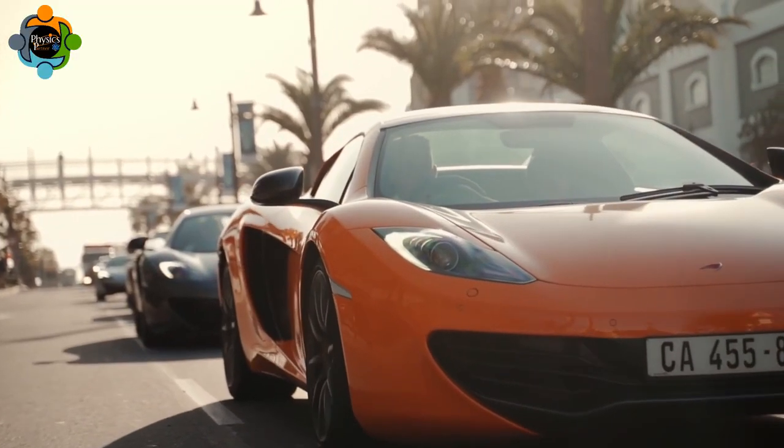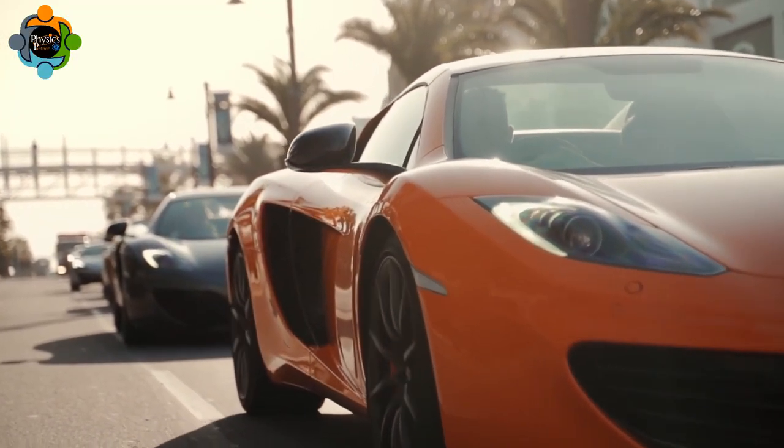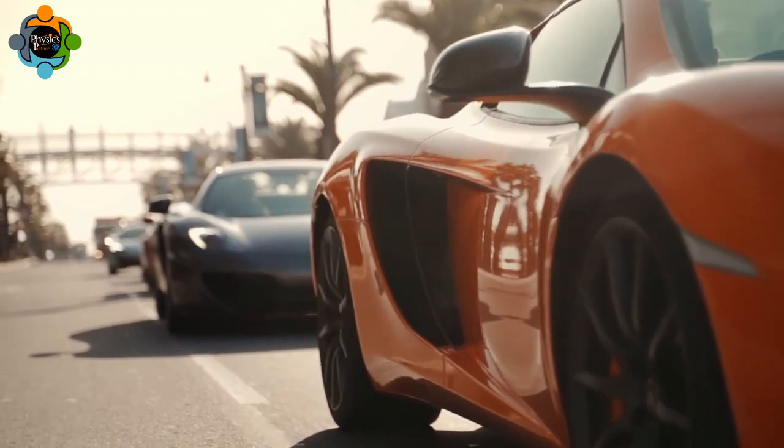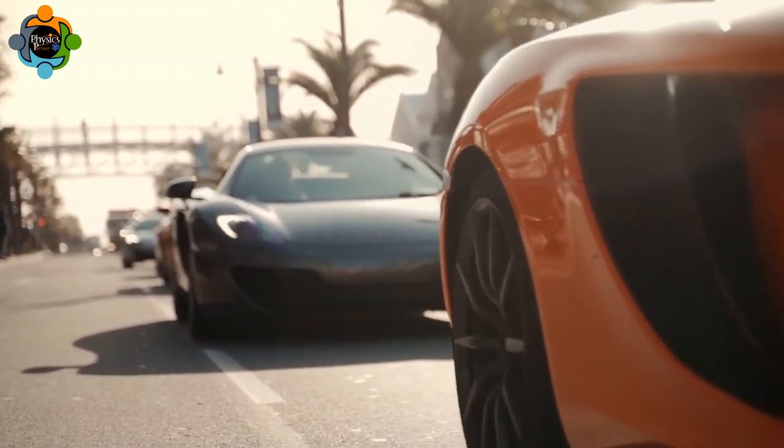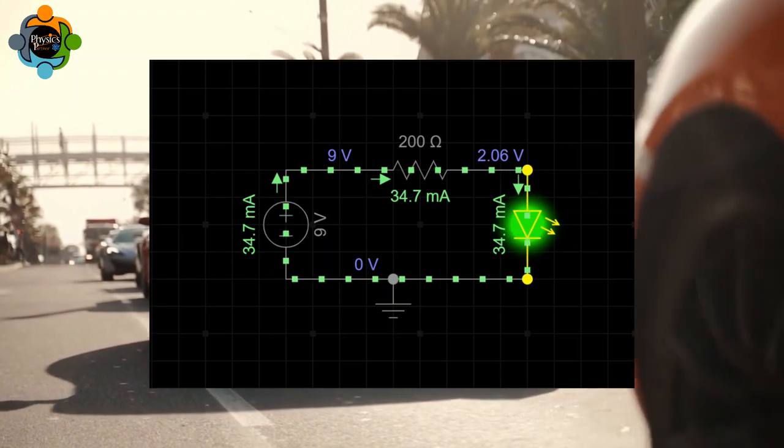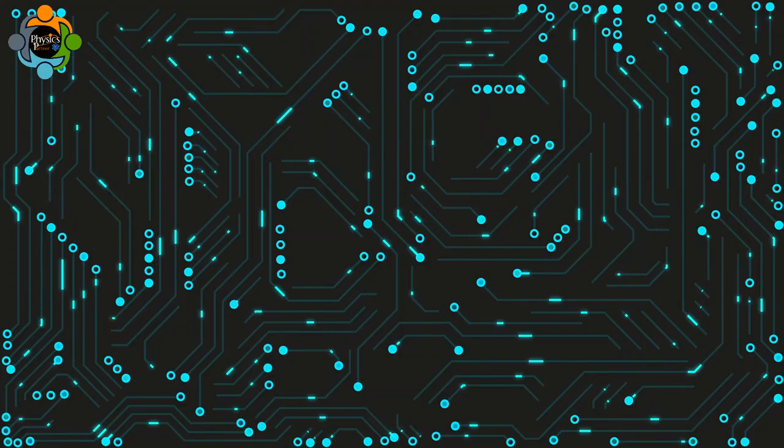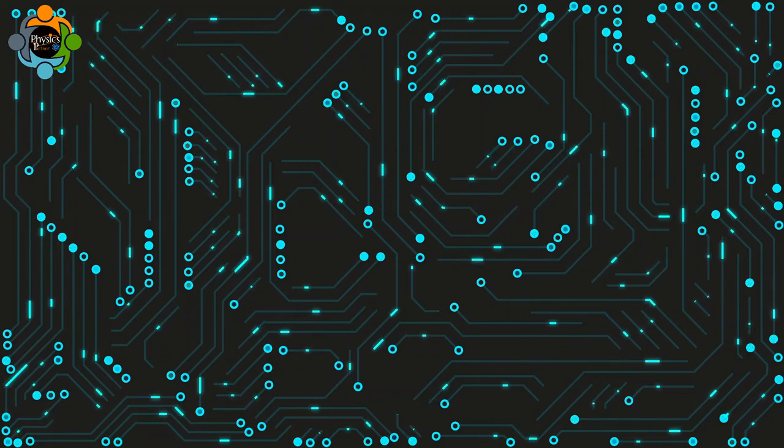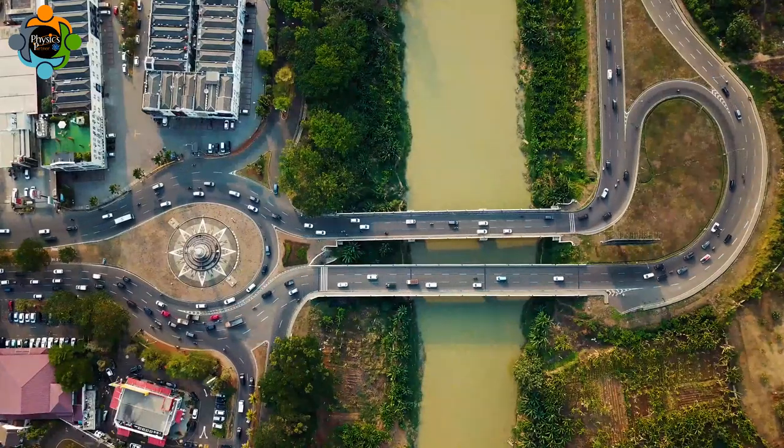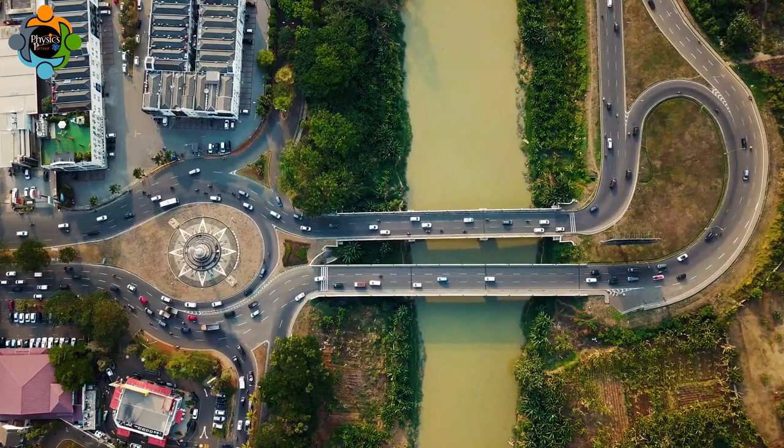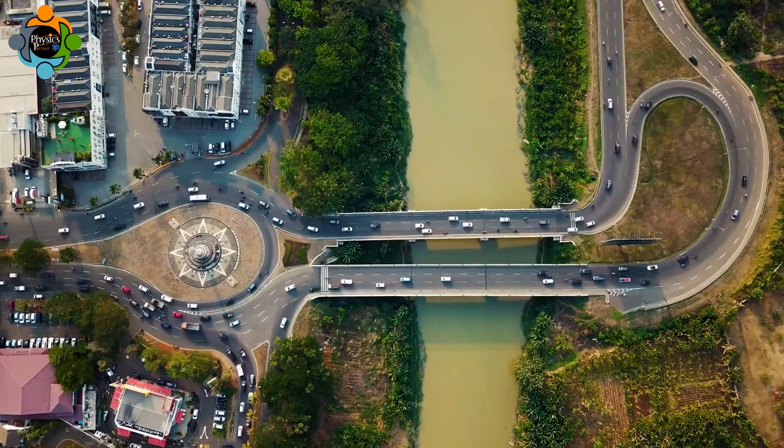Conversely, stacking up checkpoints in series on a single lane makes it progressively harder for traffic to move, just as stacking resistors in series increases the resistance. Understanding the flow of electrons in circuits is not so different from watching cars navigate roads. Whether it's cars or currents, finding the best path matters.